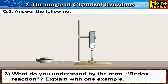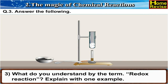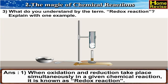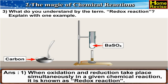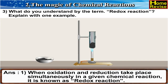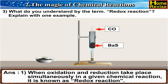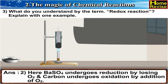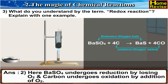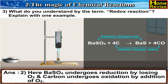3. What do you understand by the term redox reactions? Explain with one example. Answer: When oxidation and reduction take place simultaneously in a given chemical reaction, it is known as a redox reaction. For example, BaSO4 undergoes reduction by losing O2, and carbon undergoes oxidation by addition.